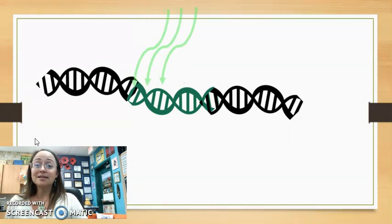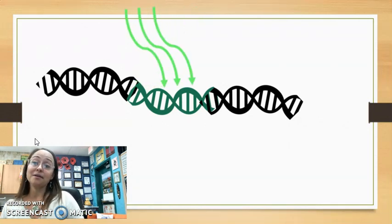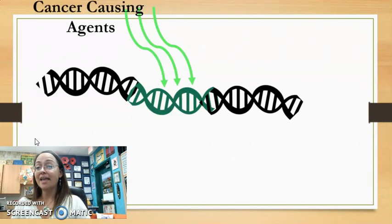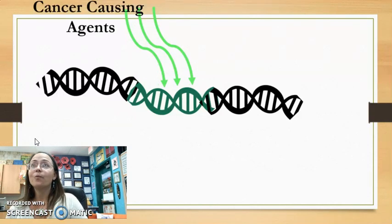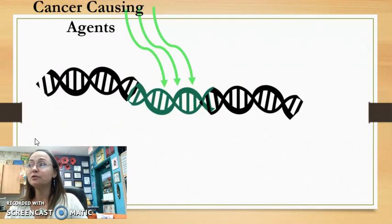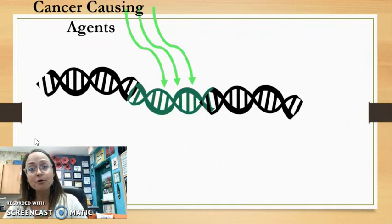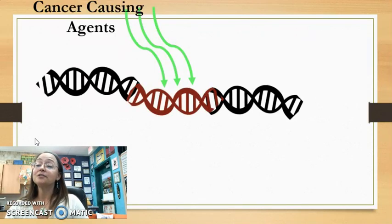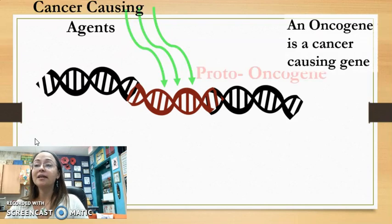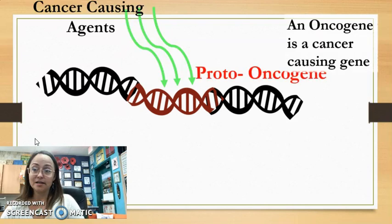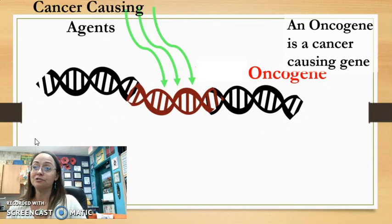Sometimes there can be damage to these genes from cancer-causing agents, whether environmental factors like UV light, certain chemicals, or radiation. Through these means, a proto-oncogene can be changed — mutated — and so a proto-oncogene becomes an oncogene.